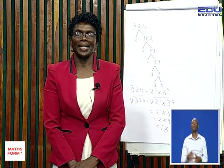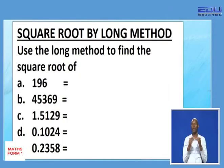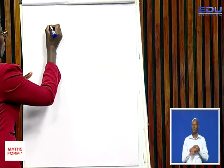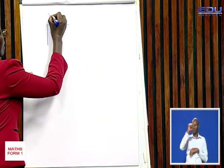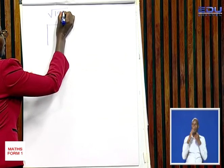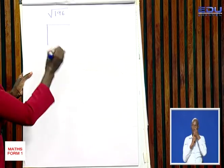Our second method, the long method of finding the square root or the general method of finding the square root. Our first number is 196. So, we want to get the square root of 196. Using this method, divide them into 2.